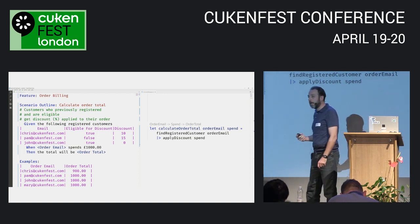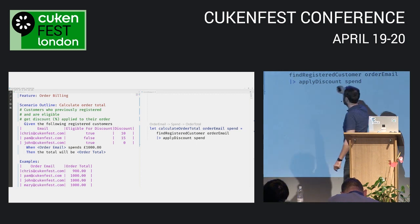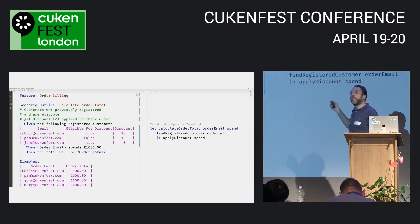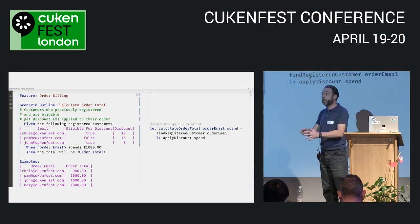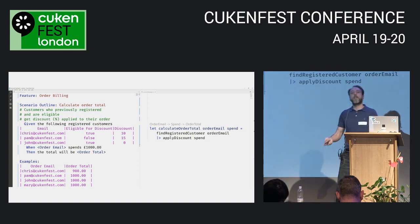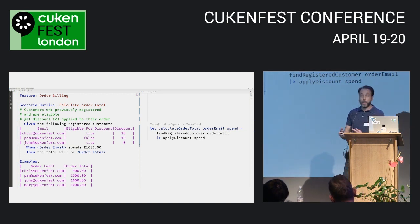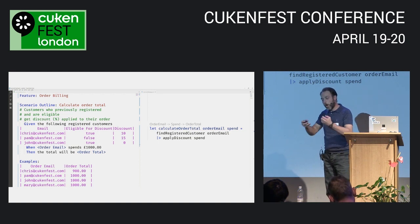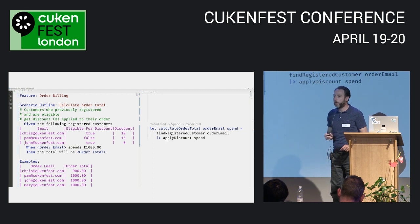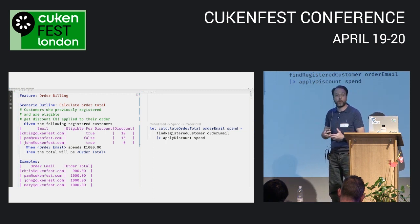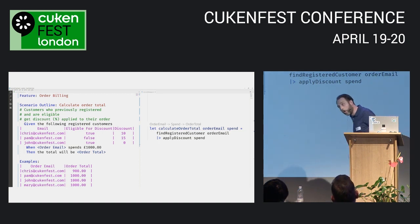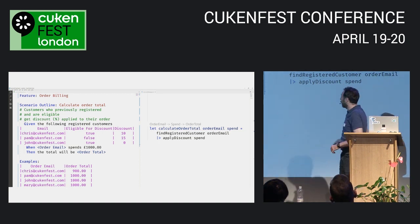The second thing to note is composability. We've taken our scenario, extracted two small functions, and plugged them together to create 'calculate order total' — which is itself just another function with inputs and an output. That plugs into a 'process order' pipeline, which plugs into a 'handle request' pipeline. In functional programming: create something small, define it with its inputs and output, then plug it together to create something bigger. It's functions all the way up.